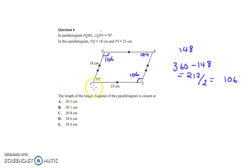The length of the longer diagonal in this parallelogram is closest to. So you have to determine which one is the longest length. Is it Q to S or is it P to R? How you determine which one is the longest diagonal is that the biggest angle will make the biggest diagonal, because the angle is opened up a lot more.